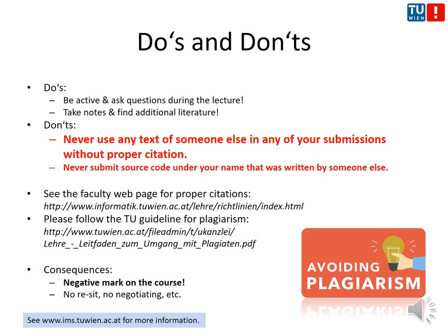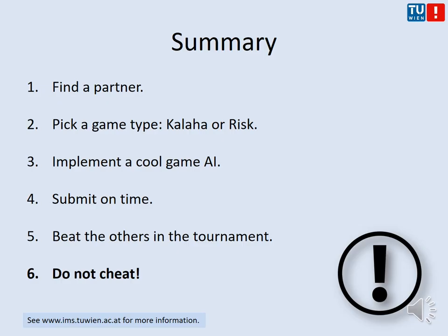If plagiarism is found, there is no reset and no negotiating — you get a negative mark. I have absolutely no understanding for that. If you aren't sure what plagiarism is, please refer to the faculty's code of conduct and the guidelines on plagiarism. It is relatively simple to implement your own game engine; you can go almost immediately to the creative part of trying different heuristics. In summary: find a partner, as groups are always two people. Pick a game — either Kalaha or Risk. Implement a cool AI, submit on time, beat the others in the tournament, and do not cheat.